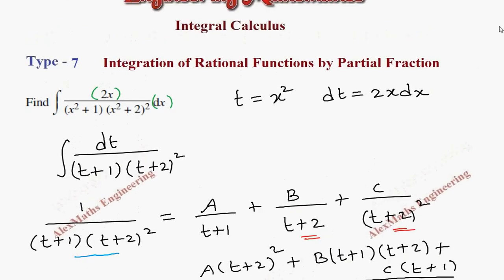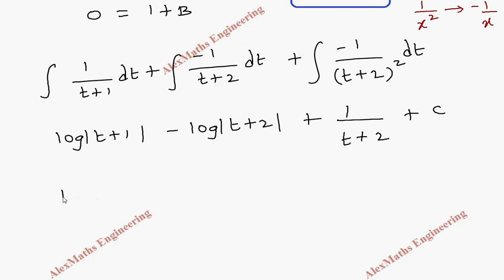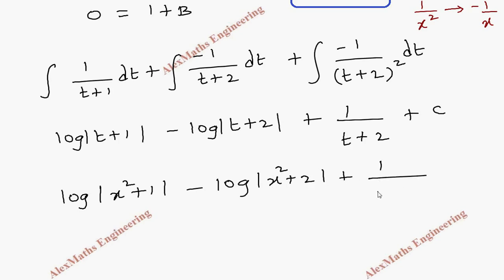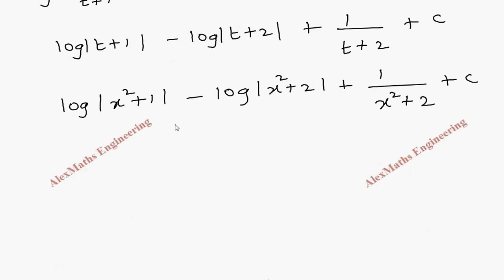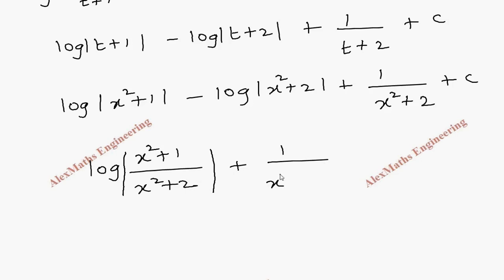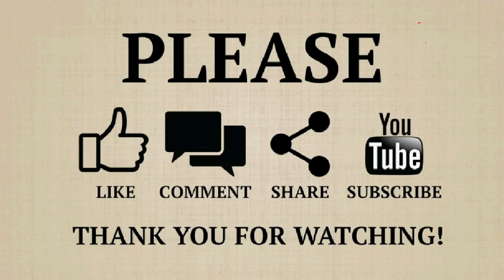Now we replace t with x² from our substitution. The result is: log|x² + 1| − log|x² + 2| + 1/(x² + 2) + C. Using the log rule log a − log b = log(a/b), the first two terms combine to give log[(x² + 1)/(x² + 2)] + 1/(x² + 2) + C.